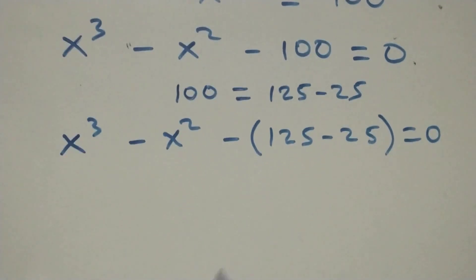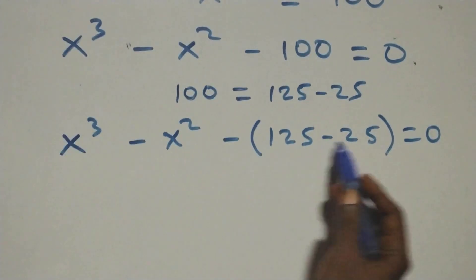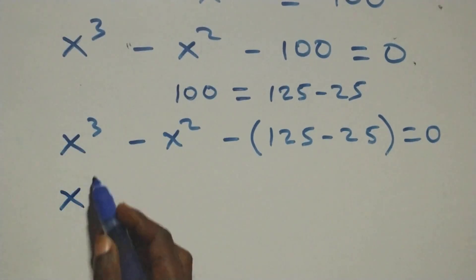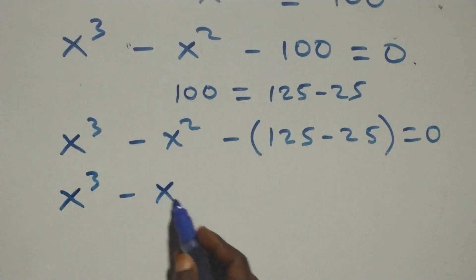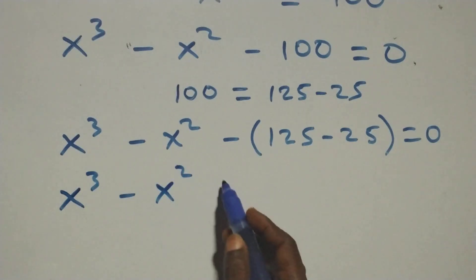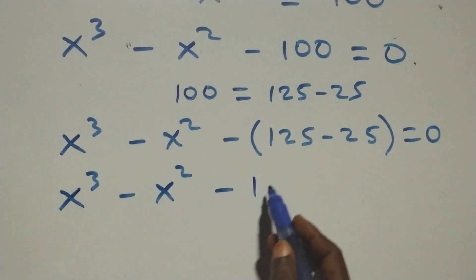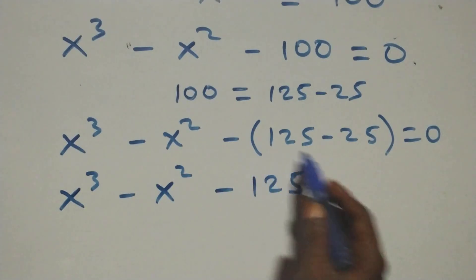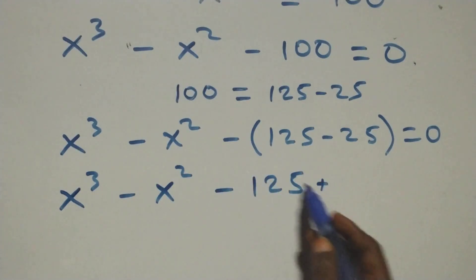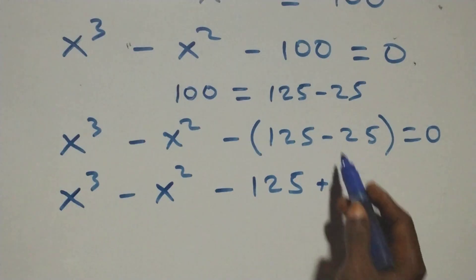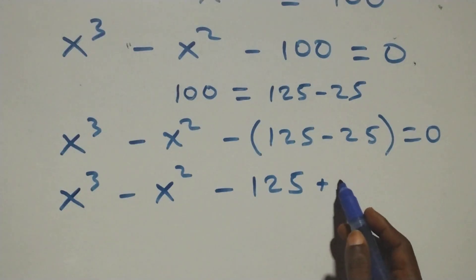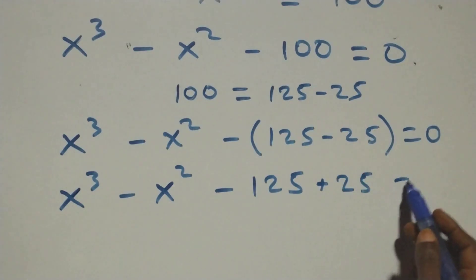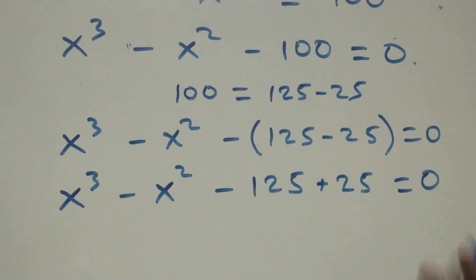Then, minus — open this bracket. We have x raised to power 3 minus x raised to power 2, then minus 125, plus — because minus times minus is plus — plus 25, equals to 0 here.